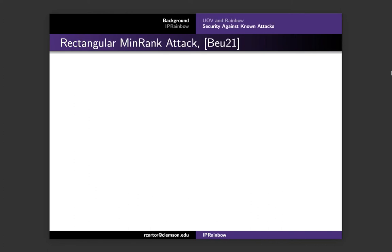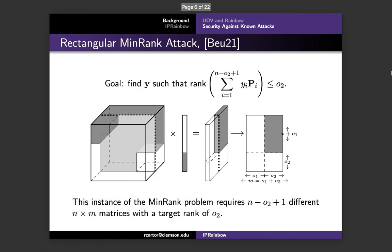The first attack we will discuss is the rectangular min-rank attack proposed by Beullens in 2021. Min-rank attacks are very effective against multivariate schemes, and the modeling of this min-rank attack is more efficient than the previous attacks against rainbow. We first consider a visual representation of the matrix representation of the central map's equations just stacked all on top of each other. So if you look at that cube, you can think about it as the central map matrices just stacked all on top of each other going from front to back.